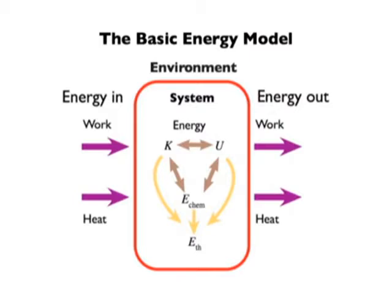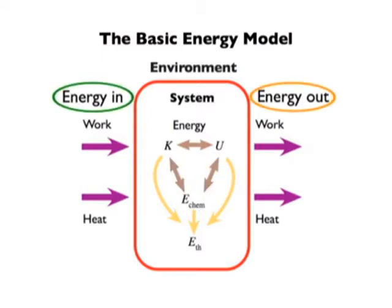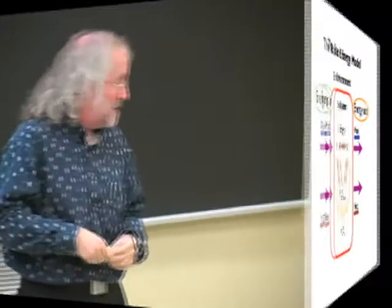Within a system, we can have changes of energy from one form to another. I can have kinetic energy changing to potential energy, potential energy goes to kinetic. There's chemical energy which can be involved. Or I could take energy into a system or energy out of a system. I can bring energy into a system in the form of work or heat — these are both transfers of energy. And then energy can go out as work or heat.